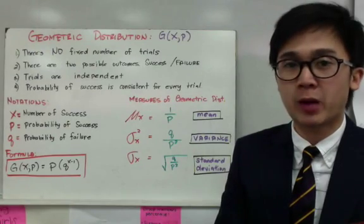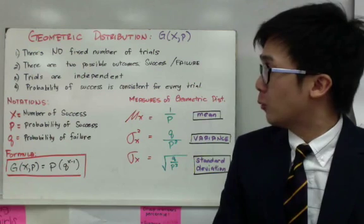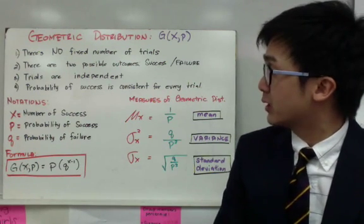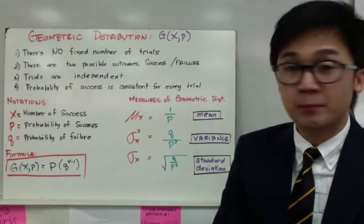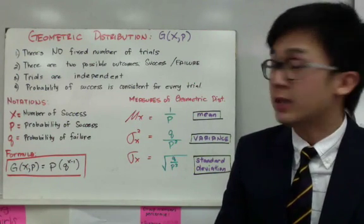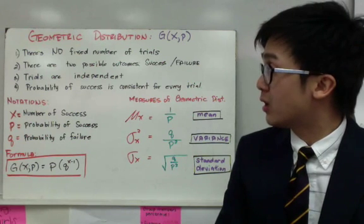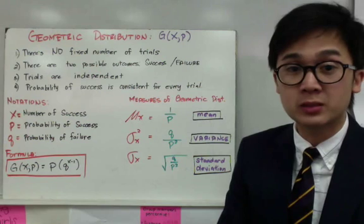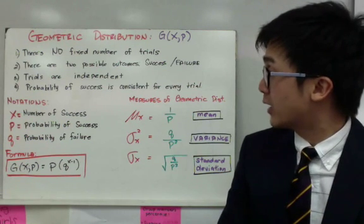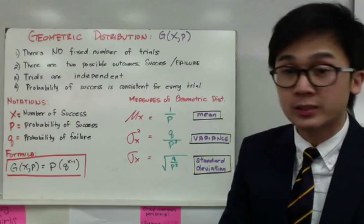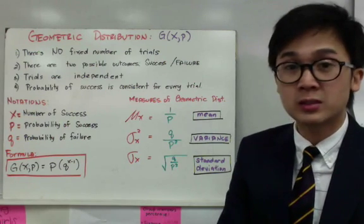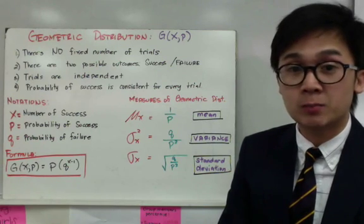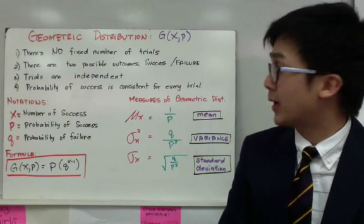Geometric distribution is closely related to binomial distribution. When it comes to its conditions, the only difference is the first condition: a geometric experiment has no fixed number of trials. All other conditions — two possible outcomes (success and failure), independent trials, and consistent probability of success — remain the same as in the binomial distribution. Only condition number one changes for a geometric experiment.